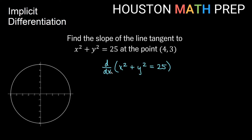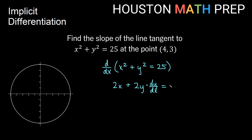If I take the derivative with respect to x of x squared, that's all just x's, so this is regular power rule: 2 comes out front, power goes down by 1, so we get 2x. Plus the next term is a y term, so I do the normal power rule — 2 comes out front, power goes down by 1 — but because there's a y in here, I also need to multiply by the derivative of the inside y. The chain rule gives us times dy/dx. Then the derivative of 25, which is just a constant, gives us 0.